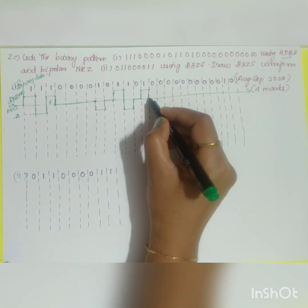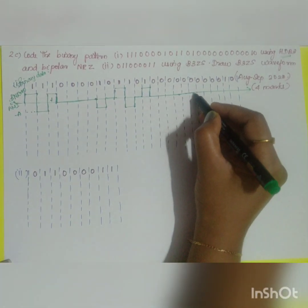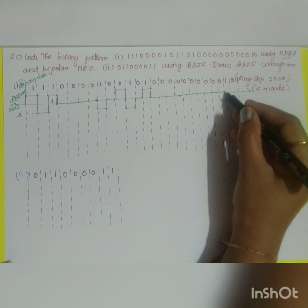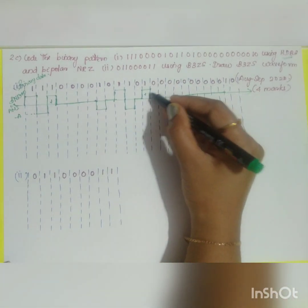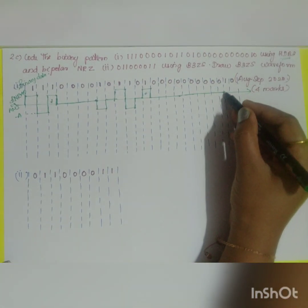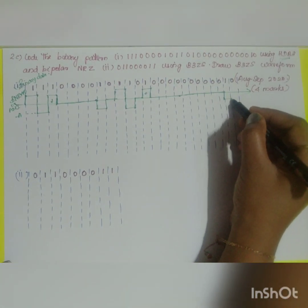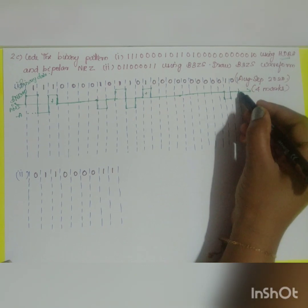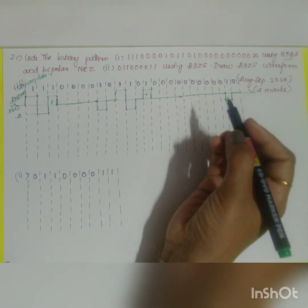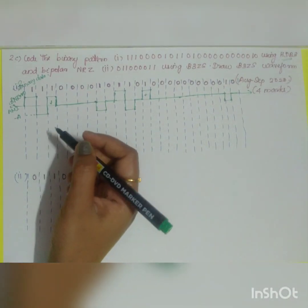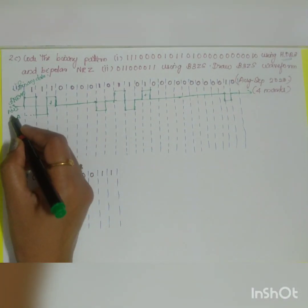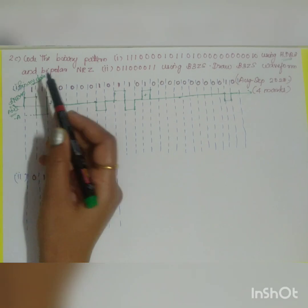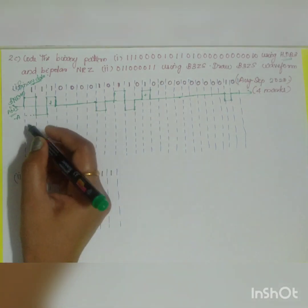All zeros are maintained at zero itself. The next bit is positive, then the next one is negative — minus A. So this is your bipolar non-return to zero for the given binary data. Now we are going to draw the HDB3 code.